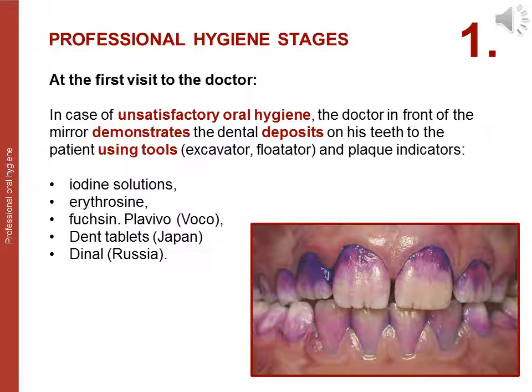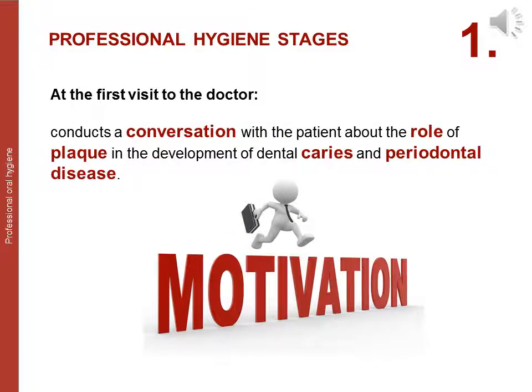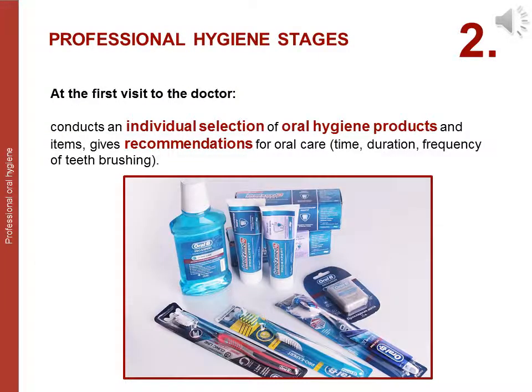In cases of unsatisfactory oral hygiene, the doctor demonstrates dental deposits on the patient's teeth using tools — excavator, probing, and plaque indicators such as iodine solutions, erythrosine, fuchsin, and dental tablets. The doctor then conducts a conversation with the patient about the role of plaque in the development of dental caries and periodontal disease — this stage is called motivation. Afterward, the doctor performs individual selection of oral hygiene products and items, giving recommendations for oral care regarding time, duration, and frequency of brushing. This is the second stage of professional oral hygiene.